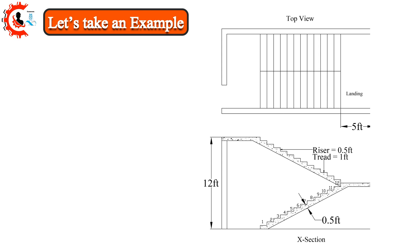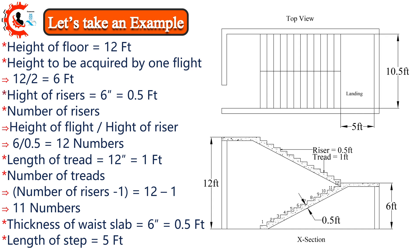Let's take an example. Height of floor = 12 feet. Height to be acquired by one flight = 12 ÷ 2 = 6 feet. Height of risers = 6 inches = 0.5 feet. Number of risers = height of flight ÷ height of riser = 6 ÷ 0.5 = 12 numbers. Length of tread = 12 inches = 1 foot. Number of treads = number of risers − 1 = 12 − 1 = 11 numbers. Thickness of waste slab = 6 inches = 0.5 feet.